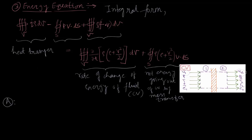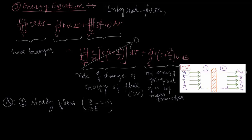We will assume that our flow is steady. What do we mean by steady flow? All terms containing ∂/∂t will become zero, so the fourth term vanishes. We also assume there are no body forces acting on the fluid contained in the control volume, meaning the third term will also become zero.